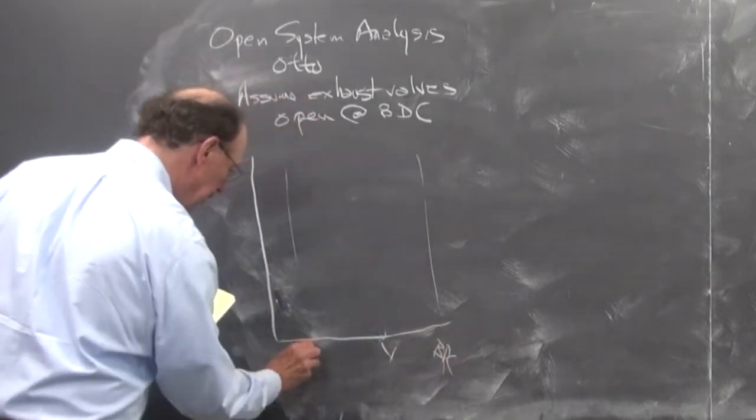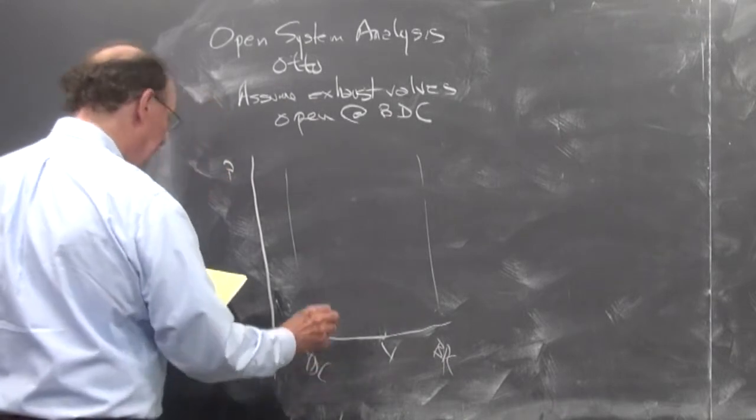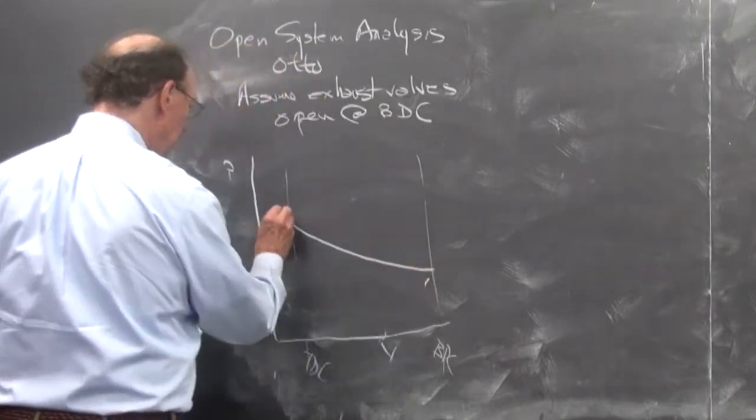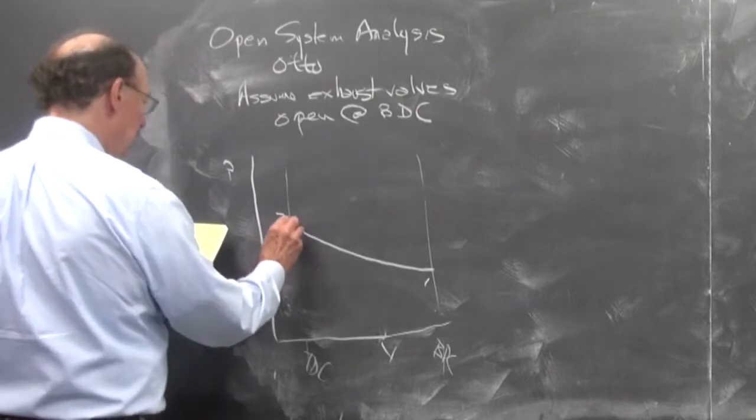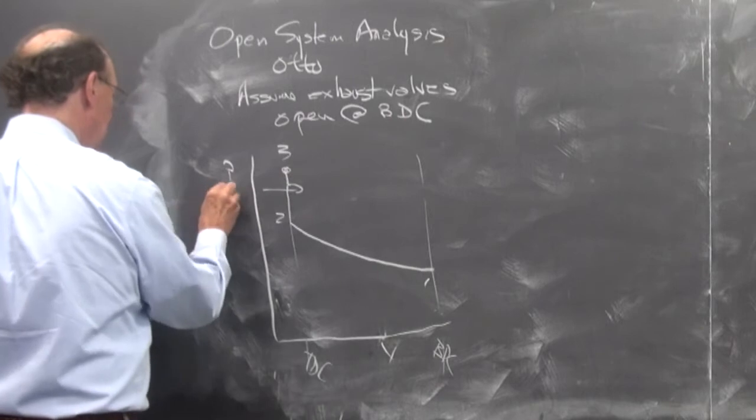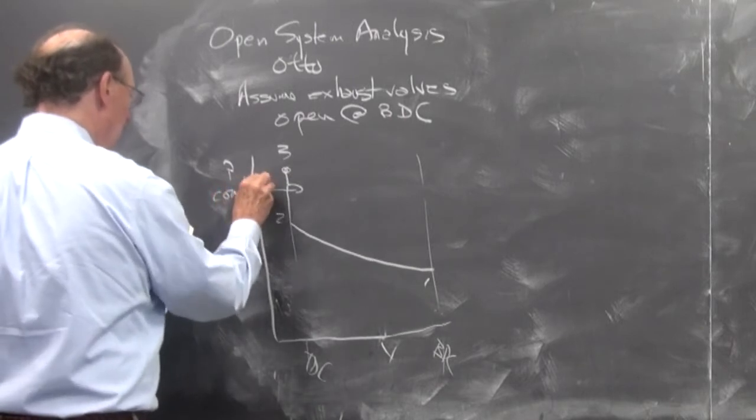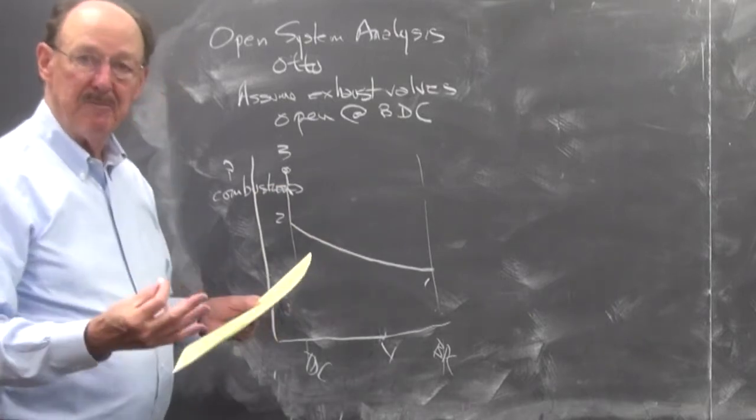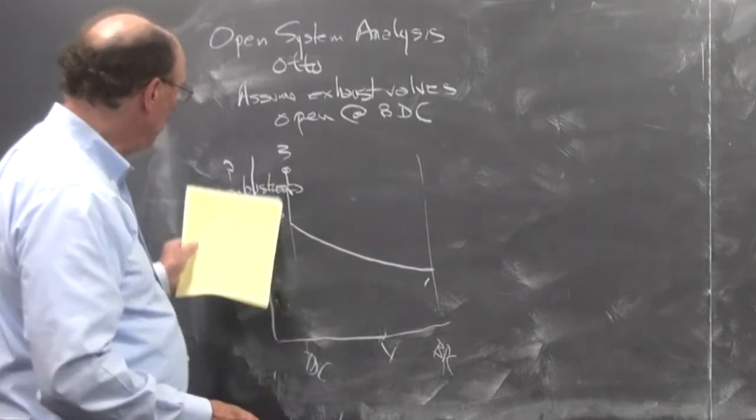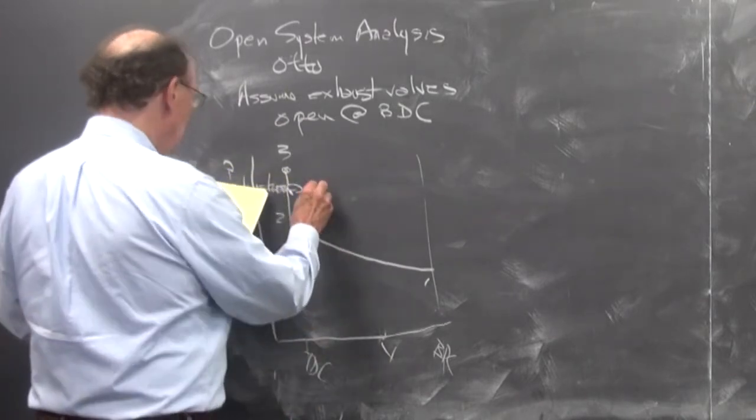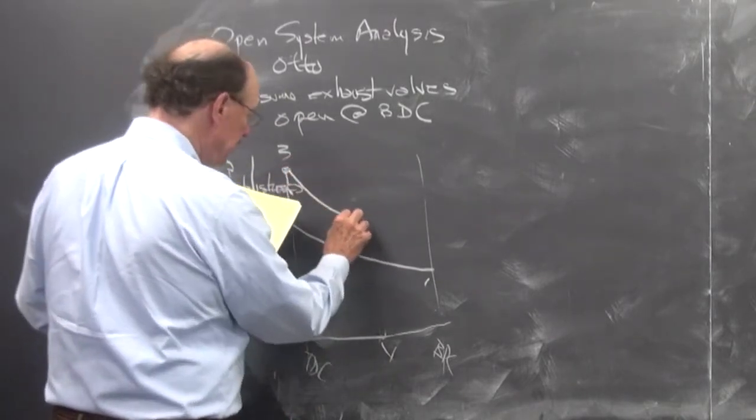From 1 to 2, no difference. From 2 to 3, we'll have combustion. We'll see what that looks like, but in this case we're going to have fuel burn, but we're going to have a burn at constant pressure. We're going to then expand down to state 4.